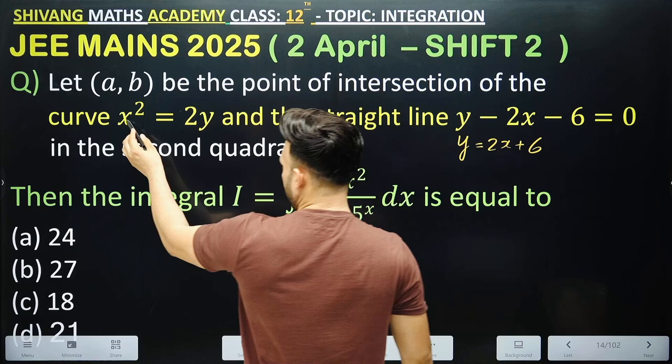So x becomes -2. Now find y from the line equation: y = 2(-2) + 6 = 2. This means a = -2 and b = 2. We write a = -2 and b = 2, and now we can integrate.